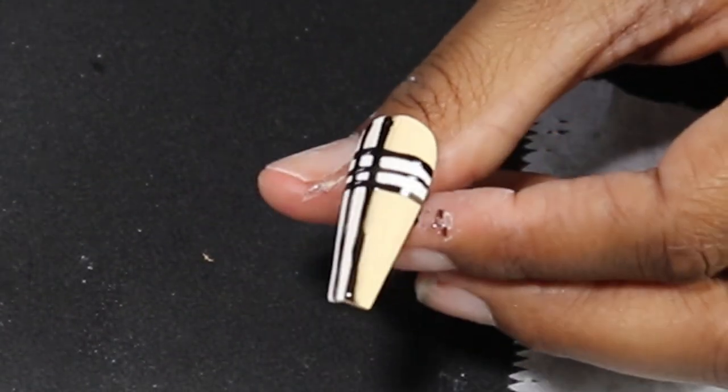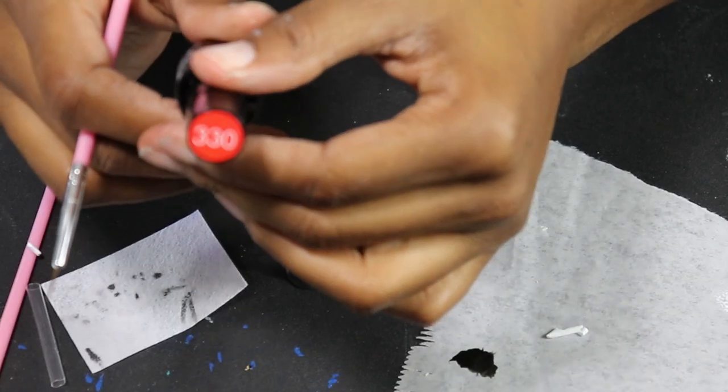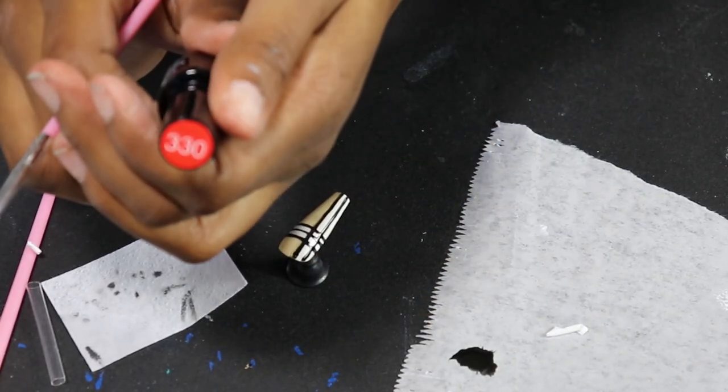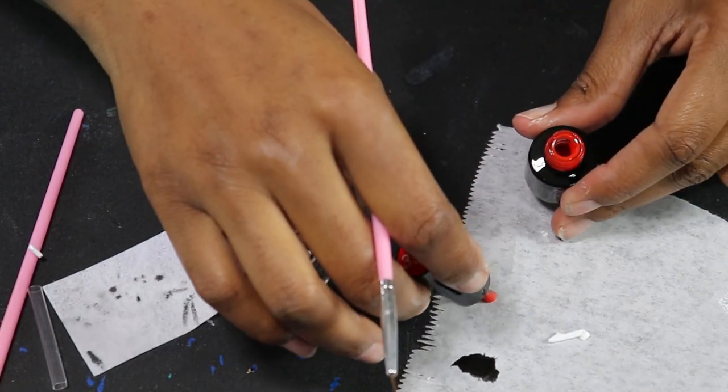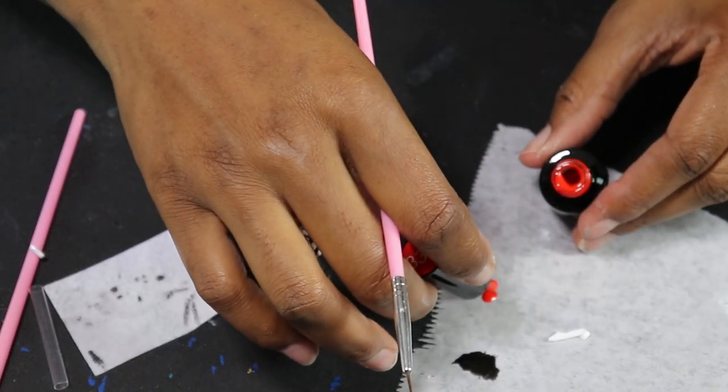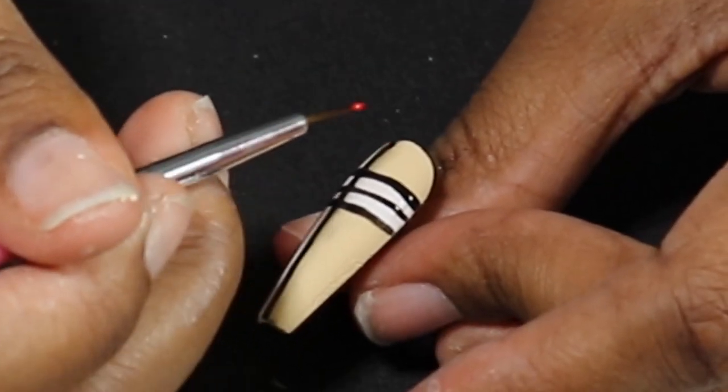So once I had these black stripes done, I went ahead and put that under the lamp to cure. And then I'm going to go in with this red color to start with the other lines. This is color 330. It's not a super opaque red. It's kind of even a little bit transparent if you wanted. But that was actually fine for when I looked at the patterns. For the most part it didn't look like the red was super super vibrant.